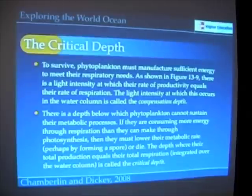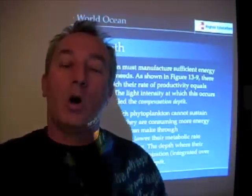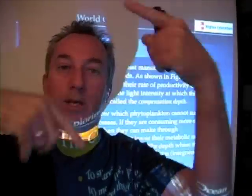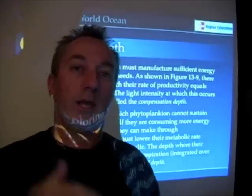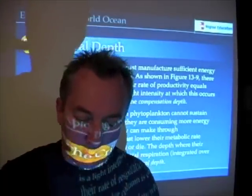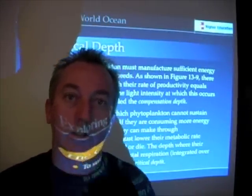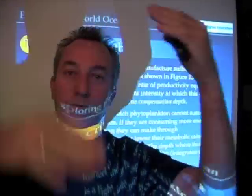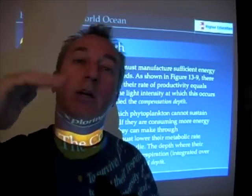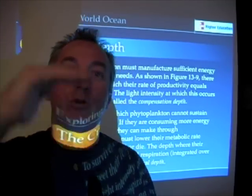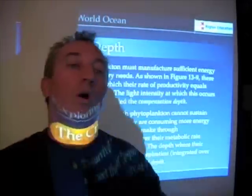This idea was put together into the critical depth hypothesis. What it says is that we have to integrate or add up all of the productivity going on in the mixed layer depth at all the different light levels experienced by the phytoplankton. As the phytoplankton moves lower in the water column because of vertical mixing, its rate of photosynthesis gets lower. But as it moves higher as a result of vertical mixing, its rate of photosynthesis gets higher. If you add up all those different rates of photosynthesis for all those different light intensities, we have the total production of the phytoplankton in one excursion.